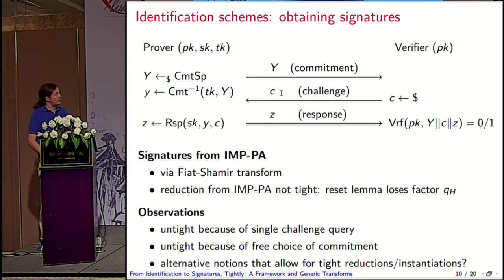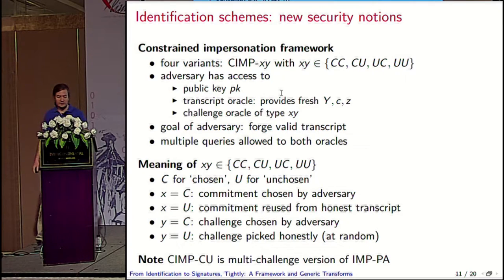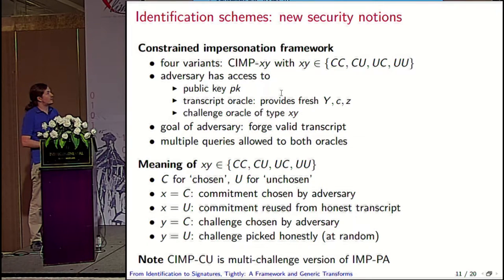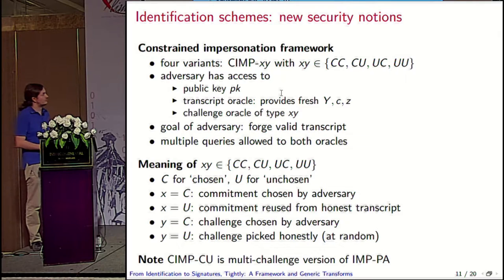We propose some — actually four — and we call this a framework of notions. We call them constrained impersonation notions because we constrain the adversary in some way. The four notions are called SIMP-CC, SIMP-CU, SIMP-UC, and SIMP-UU. In our setting the adversary again has access to the public key, to a transcript oracle which it can query multiple times to generate fresh transcripts, and to a challenge oracle. But now the challenge oracle's behavior depends on the exact type you want. Multiple queries are allowed to both oracles, unlike IMP before which allowed only one challenge query.